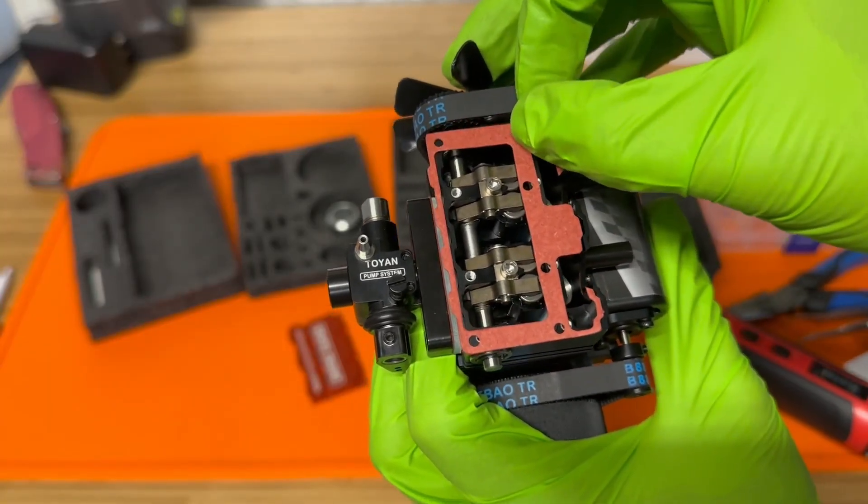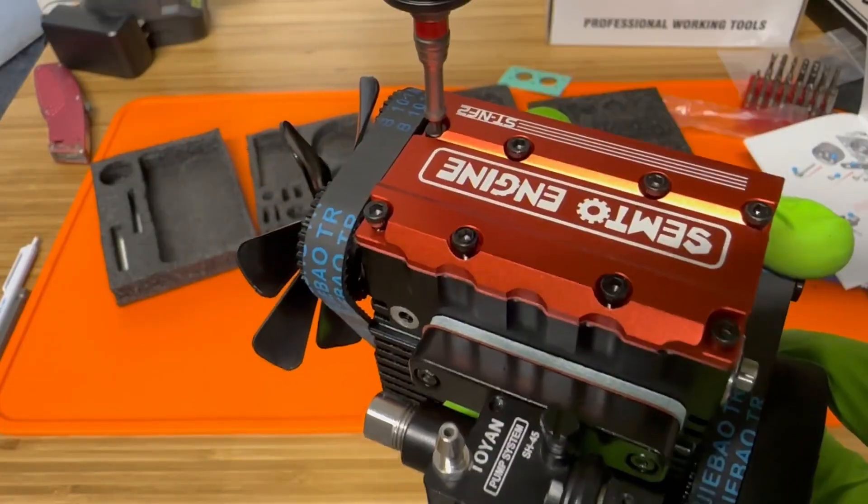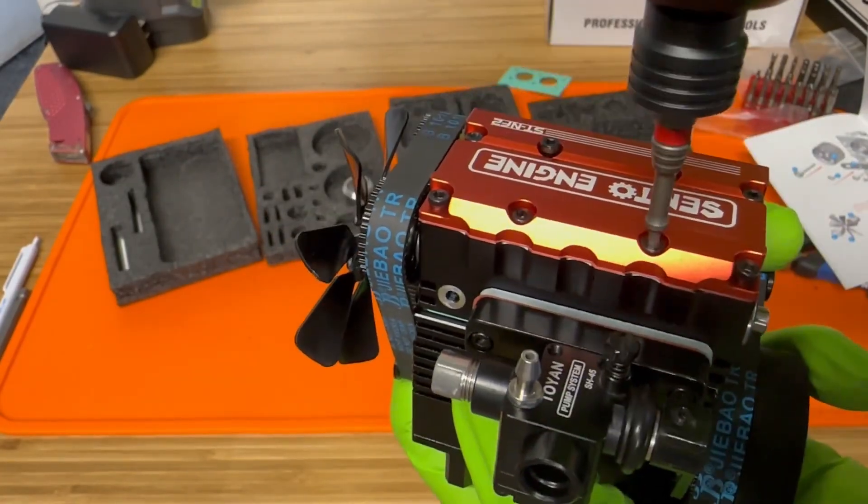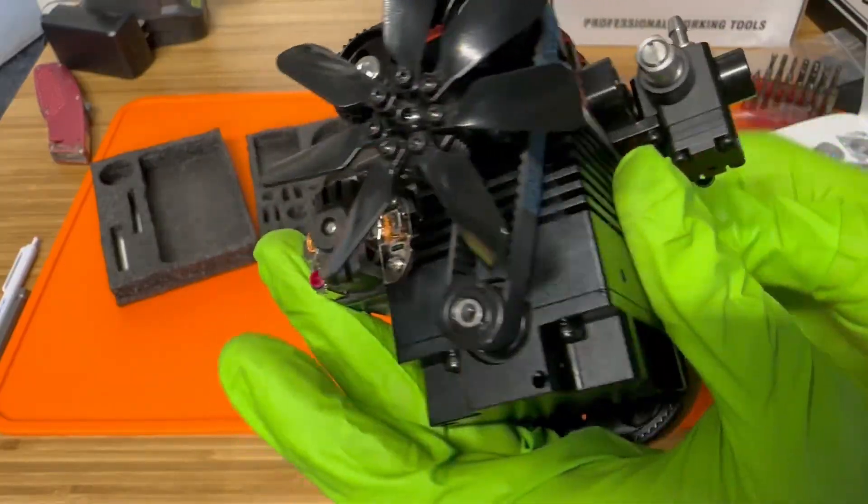Next will be the valve cover gasket. And this is held on with eight screws. And of course inspect your gasket to make sure it's sealed properly.